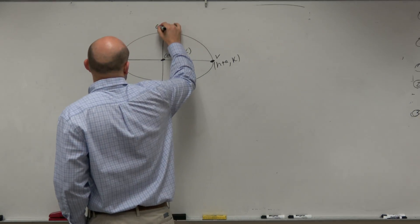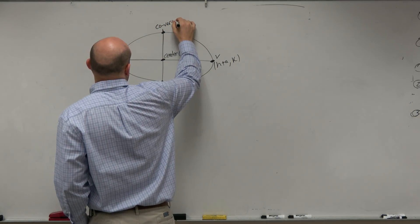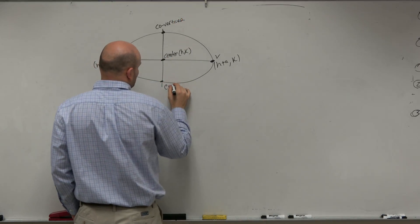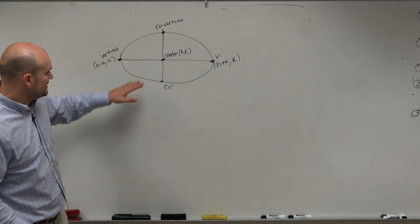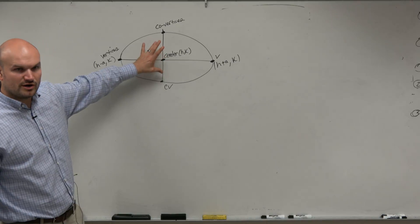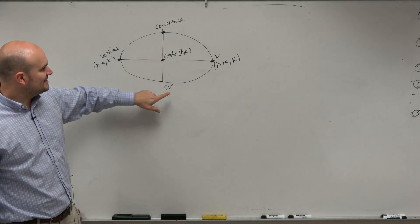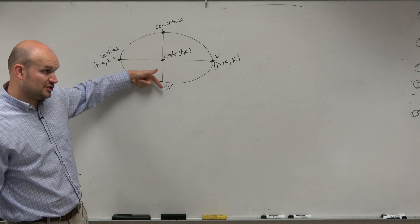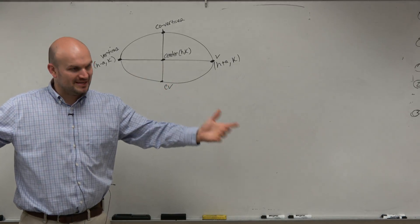So then we talked about our co-vertices. Sometimes just label them as cv. And those are at the endpoints of like this shorter kind of axis. And the distance from the center to your co-vertices was b.